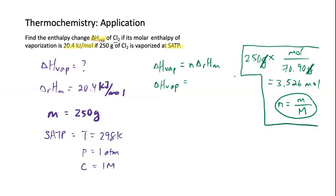Let's go back to what we were doing. So N is 3.526 mole, and we are multiplying that by 20.4 kilojoules per mole. So delta H vaporization is 71.9 kilojoules. And it is to 3 significant figures, because this is 3, that is 3. And we're done.